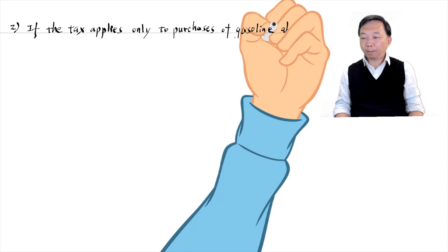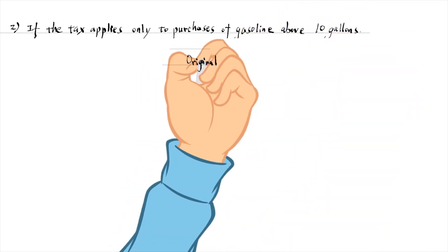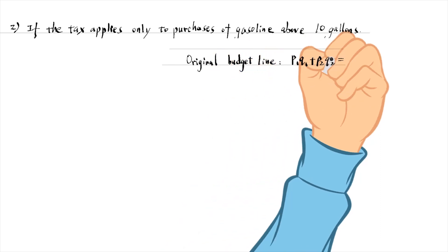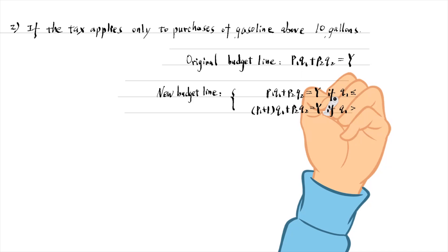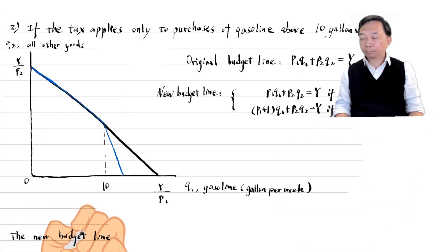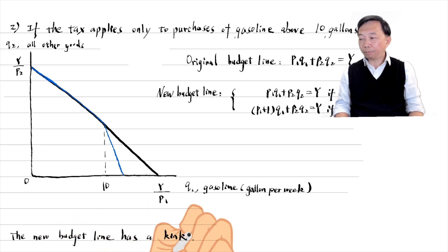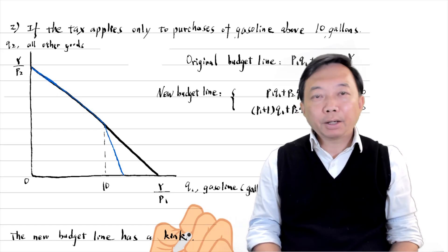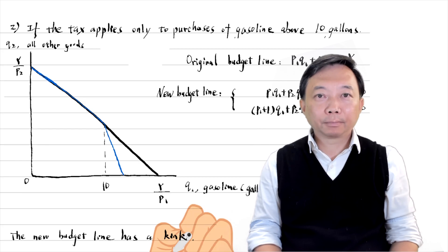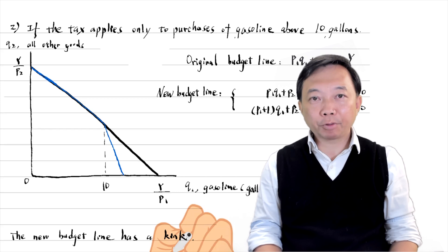Second, we consider if the tax applies only to gasoline purchases above 10 gallons. The new budget line has a kink. The slope of the budget line is different before and after the kink. The opportunity set also shrinks in this case, but not as much as in the first case. Thank you for solving the exercises with me today. See you tomorrow in the next part of chapter 3. Goodbye.